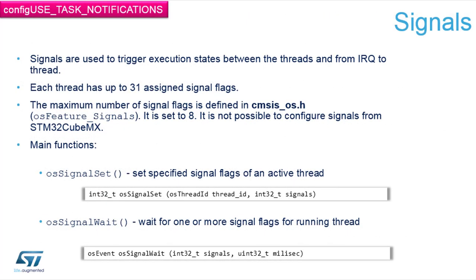In terms of CMSIS OS API, the feature is defined as signals. You can see that we can send a signal to the task with osSignalSet, providing the thread ID and the binary combination of signals. When we wait for the signals, we can use the function osSignalWait, where we specify the expected signals and the timeout in milliseconds. In the native API, these signals can be masked.